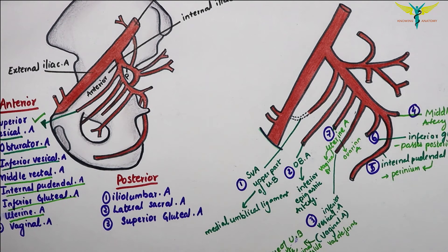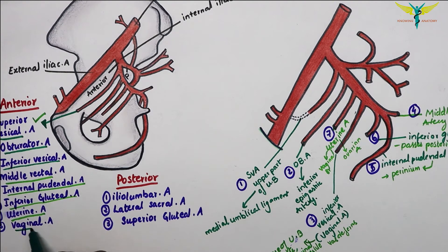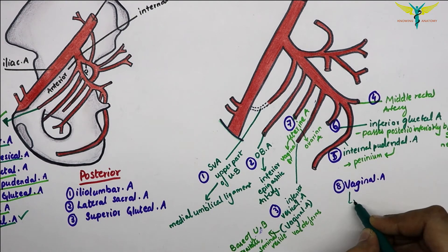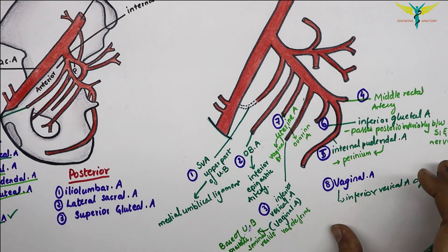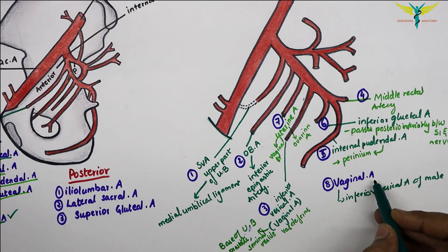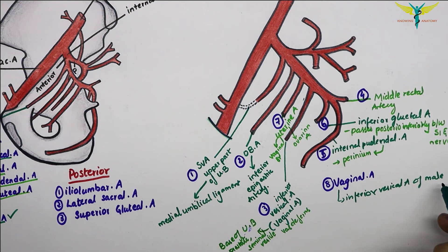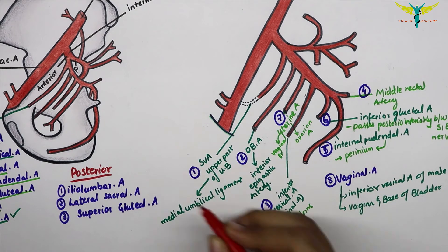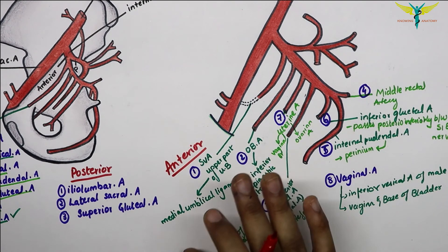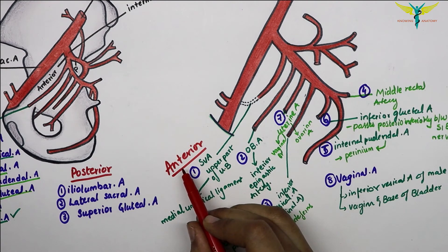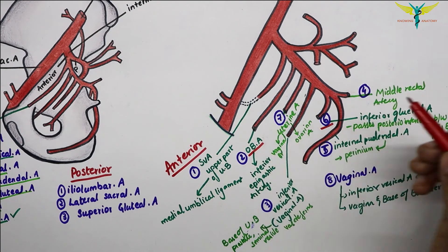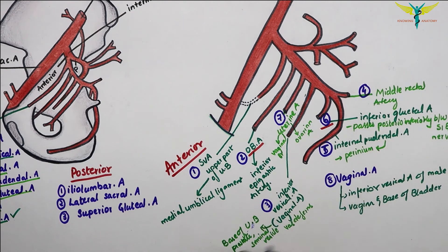The last artery of the anterior division is the vaginal artery, which corresponds to the inferior vesicle artery of the male. It supplies the vagina and the base of the bladder, and is only present in females. An important point: all branches of the anterior division are visceral branches, except the inferior gluteal artery and the obturator artery, which are parietal branches.